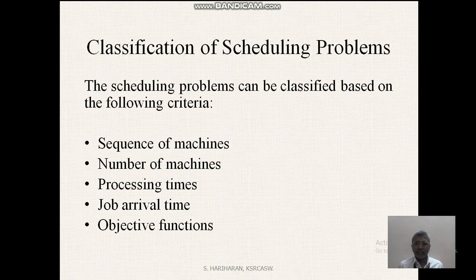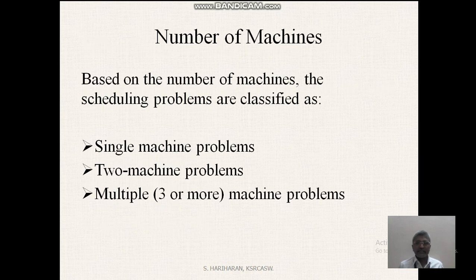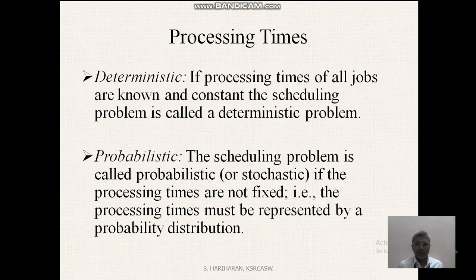Classification of scheduling problems: the scheduling problems can be classified based on the following criteria — sequence of machines, number of machines, processing times, job arrival time, and objective functions. Based on the number of machines, the scheduling problems are classified as single machine problems, two machine problems, and multiple (three or more) machine problems.